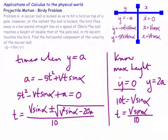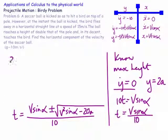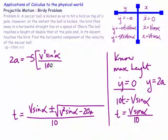We substitute that into the y expression, knowing it equals 2a at that time: 2a equals minus 5 times t², where t² is v² sine² alpha on 100, plus vt sine alpha — which is v² sine² alpha on 10.